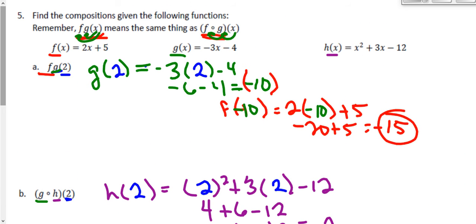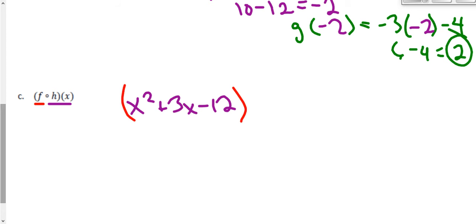f of x takes what I plug in here and it multiplies it by 2 and it adds 5. So we need to take this function and multiply it by 2 and add 5. Once I'm done with that, this problem will be finished. So let's go ahead and multiply this by 2. I'm going to distribute the 2 to everything inside my parentheses.